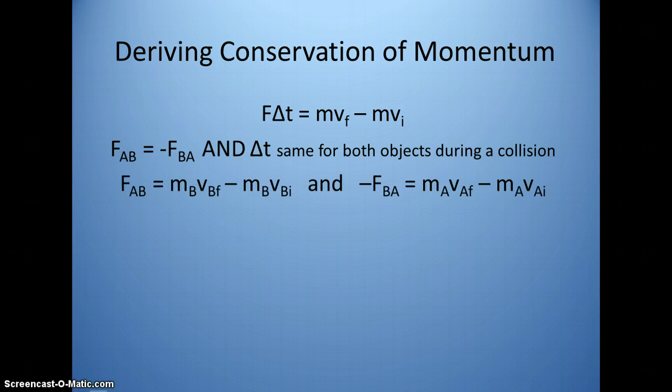So what that means is we could basically say that the force of A on B causes a change in momentum of B, and the negative force of B on A, which is the opposite of A on B, is equal to the change in momentum for object A. And you could see that on the right.